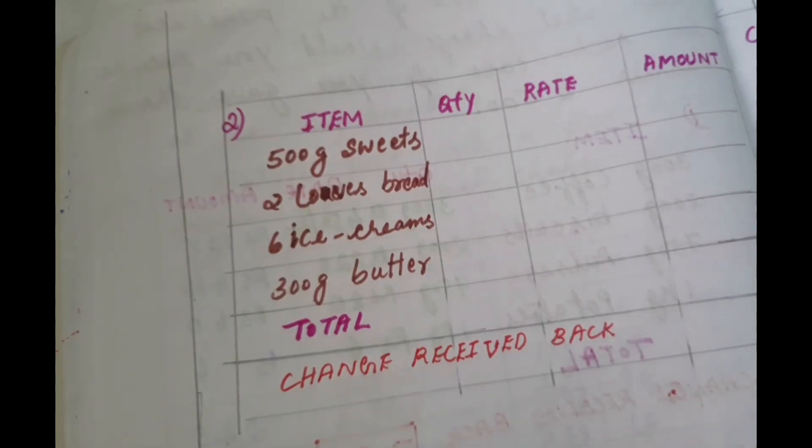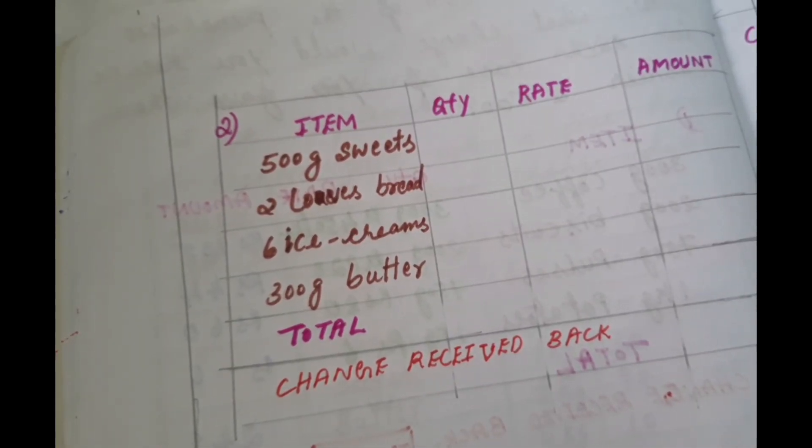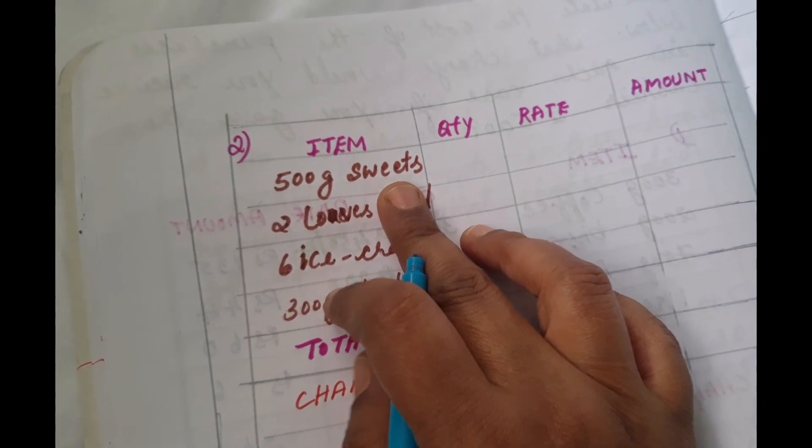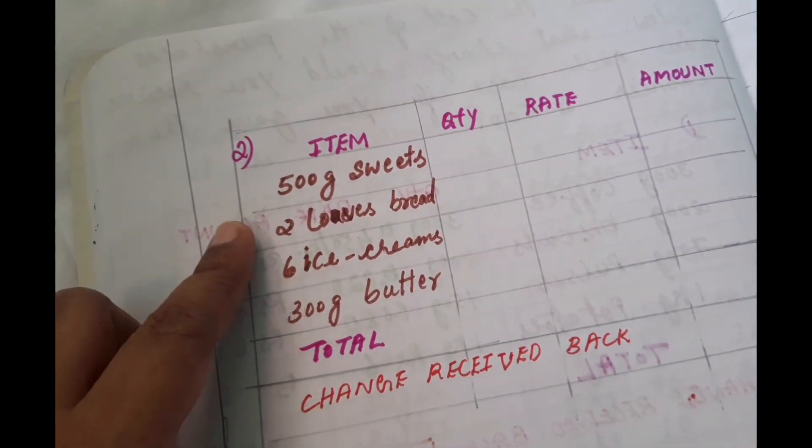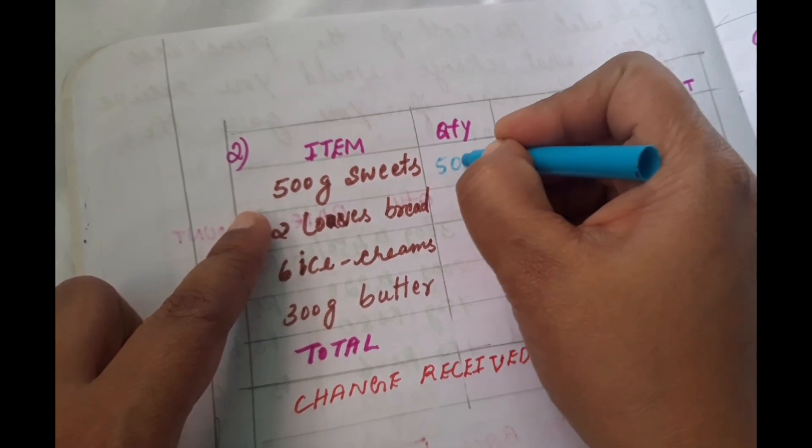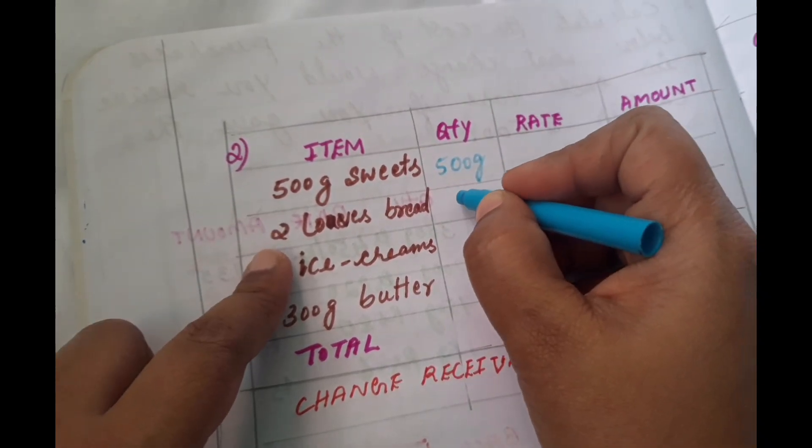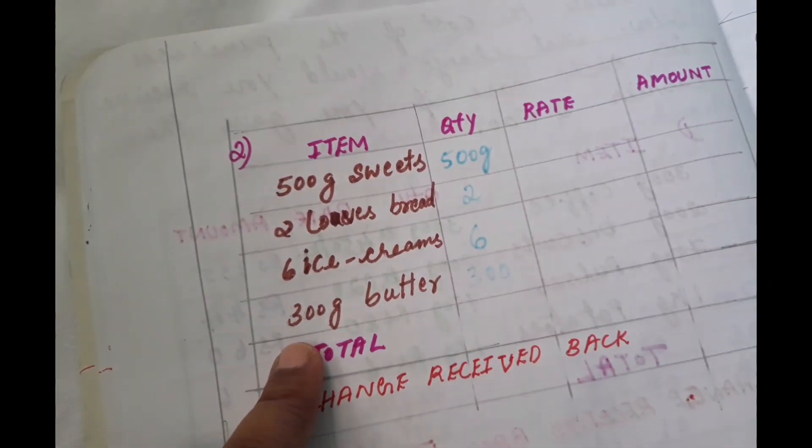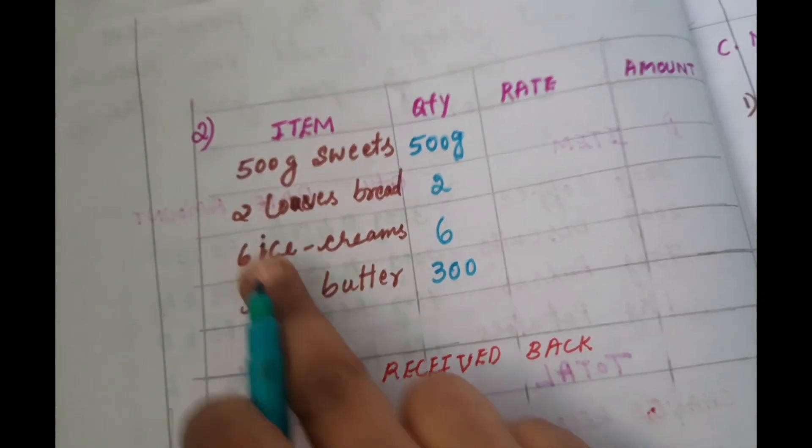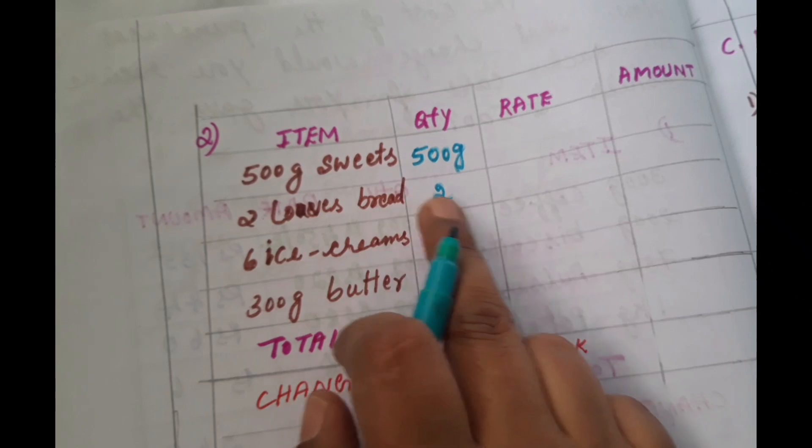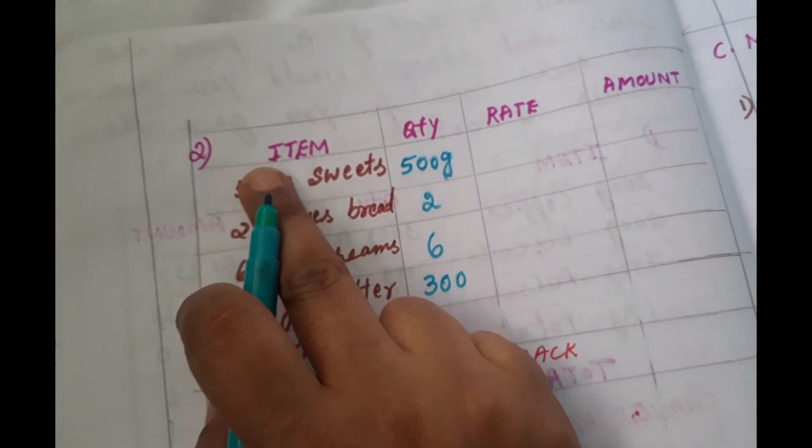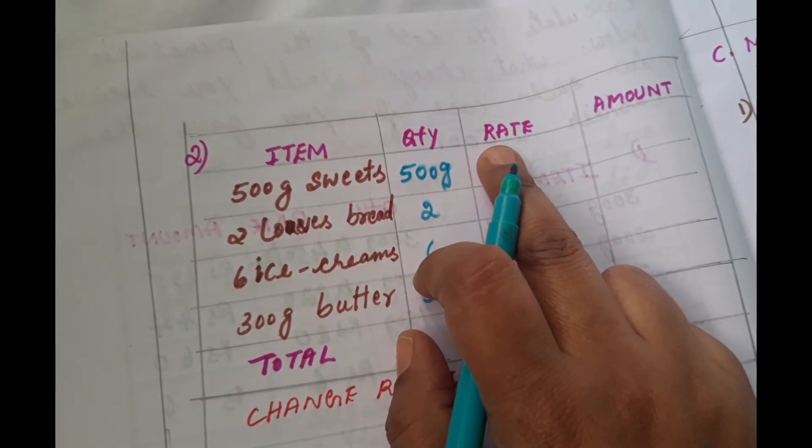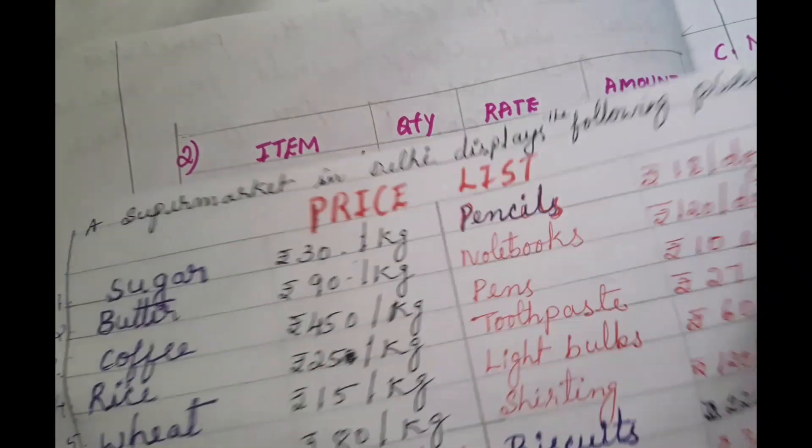Here we have to find the amount. I separately written in the notes: 500 grams of sweets, 2 loose bread, 6 ice cream, and 300 grams of butter. Per item we have to write the quantity, rate, and amount as given in the textbook.